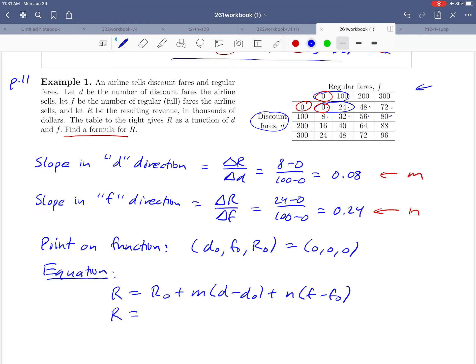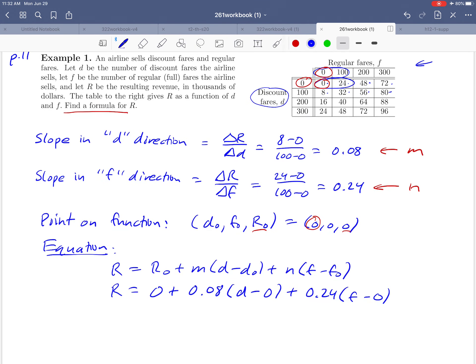Last step is to just go ahead and fill in the values that we got. So R0 is 0, we can see from our choice that we made there. M we calculated to be 0.08. D minus D0, and D0 is sitting right here. And F0 is also 0. Remember that nice point that we chose. And if we simplify that a little bit, we got a lot of zeros that we don't really need to write. We're going to get 0.08 times D plus 0.24 times F. That should be our answer. That's the formula for this function.